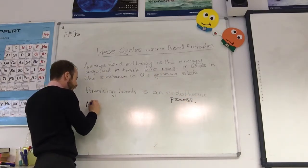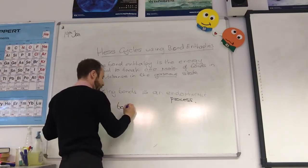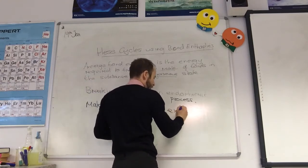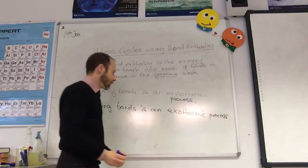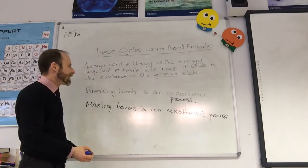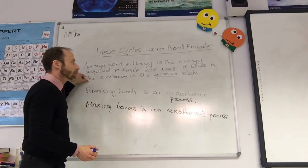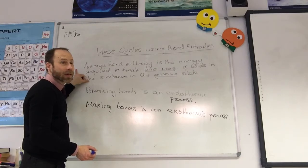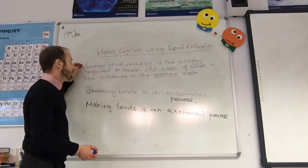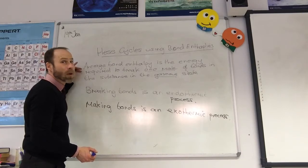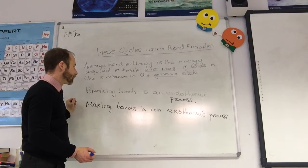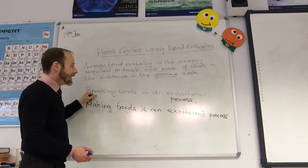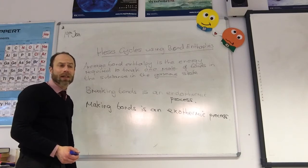And that means that making bonds is an exothermic process. So remember that: breaking bonds is endothermic — we've got to put energy in. So what sign will be against every single bond enthalpy that's given to you? Well these are going to be positive figures, because average bond enthalpy is the energy required to break one mole of bonds, which is endothermic. So they're always going to be positive figures.